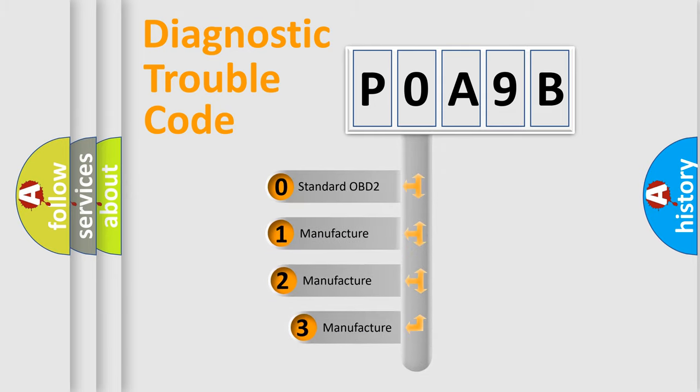If the second character is expressed as zero, it is a standardized error. In the case of numbers 1, 2, or 3,